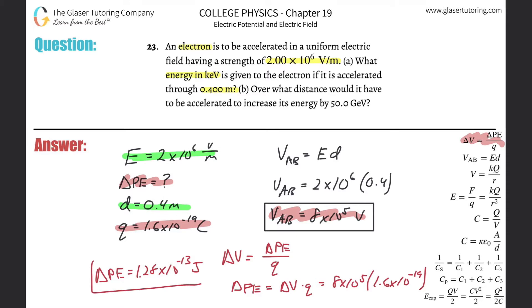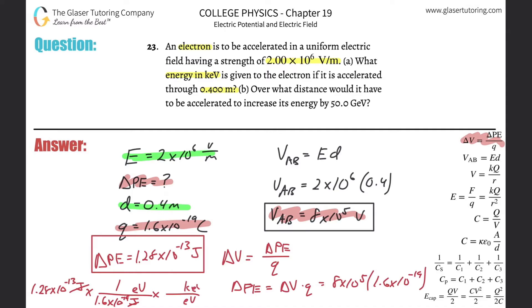Now, what did they ask us? They asked us for kilo electron volts. So we're going to do the conversion quickly. Let's just move that up a little bit. So we know that we got 1.28 times 10 to the minus 13th joules. We know that every electron volt, one electron volt has a value of 1.6 times 10 to the minus 19th joules. So the joules go bye-bye. I don't want electron volts, I want kilo electron volts. So that means I just got to convert that into kilo electron volts. For every one kilo, there's a thousand base. So that goes bye-bye.